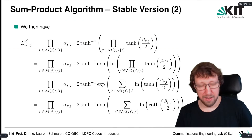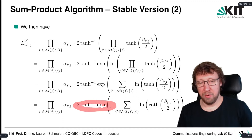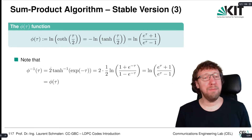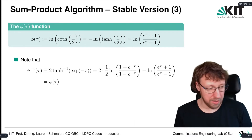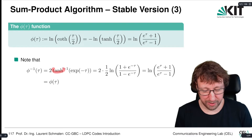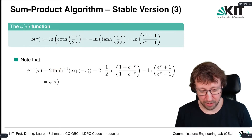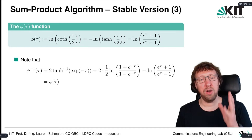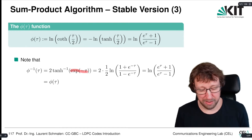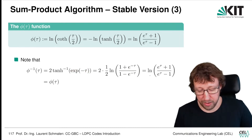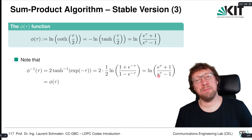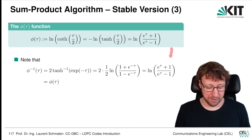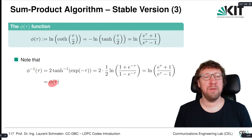That sounds familiar — and that's because it matches what we had before. Here we have the inverse of the phi function. Let's verify: inserting the definition of tanh⁻¹, we get log((1 + e^(−τ))/(1 − e^(−τ))), which simplifies to log((e^τ + 1)/(e^τ − 1)). Comparing, it's exactly the same. So we have a function that is self-inverse: phi⁻¹(τ) = phi(τ). Very nice.